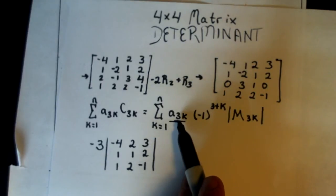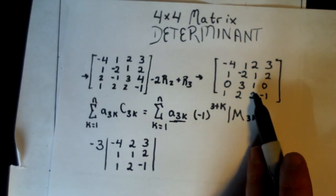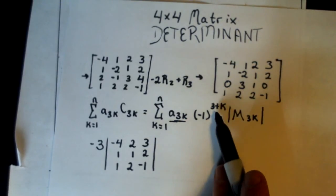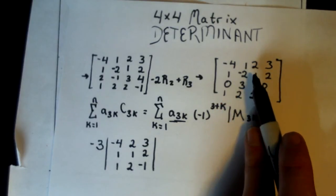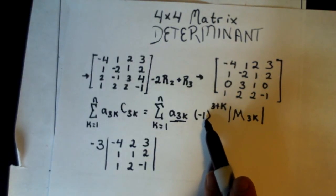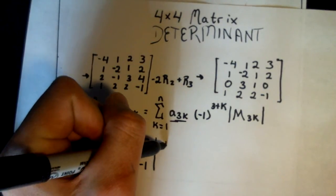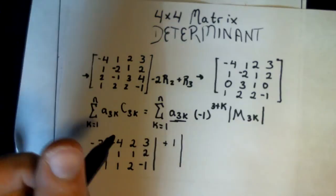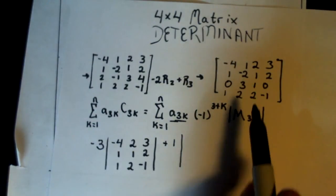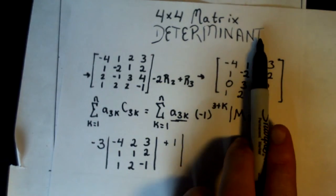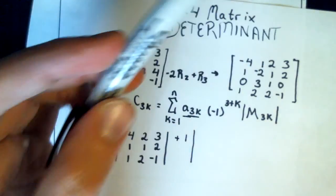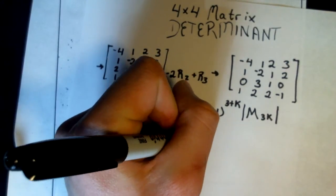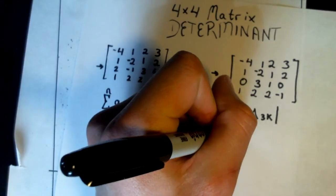So we have a3k, we know that is 1. And now we have 3 plus the third column, so that's 6. This is going to be a positive 1. So we have positive 1 times the determinant of, again, the 3 by 3 matrix, when we get rid of the third column and the third row. So that will just be negative 4, 2, 3.